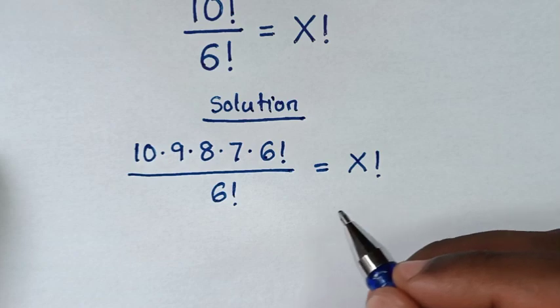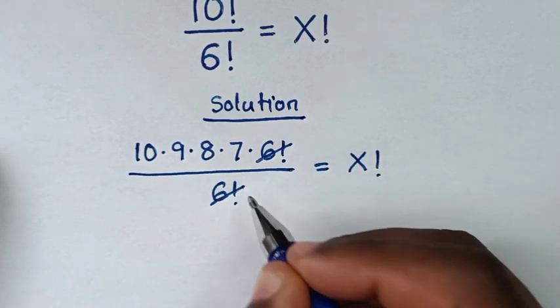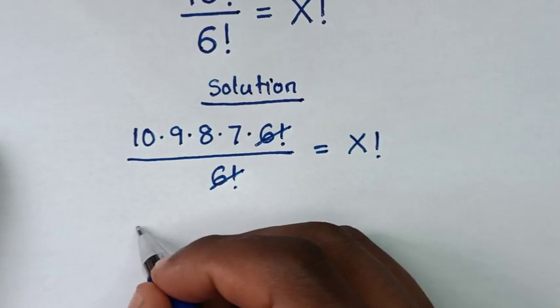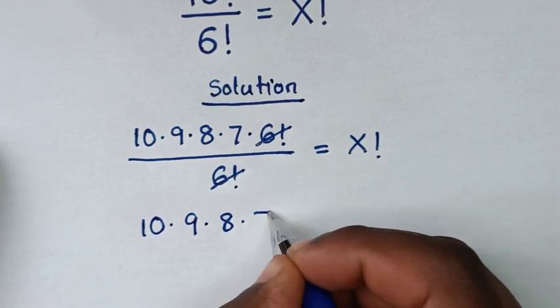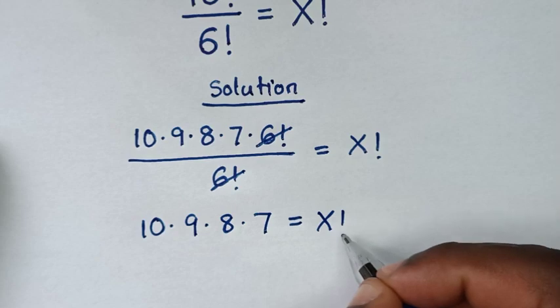Then in the next step, we will simplify and cancel this 6 factorial. So we have 10 times 9 times 8 times 7 equals x factorial.